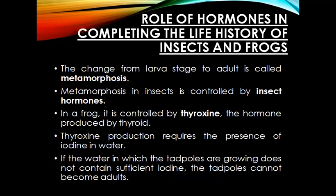Now let's discuss the role of hormones in completing the life history of insects and frogs. As we discussed in chapter 9, metamorphosis is the change from the larva stage to the adult stage. In insects this process is controlled by insect hormones, and in frogs it is controlled by thyroxine, the hormone produced by the thyroid gland.